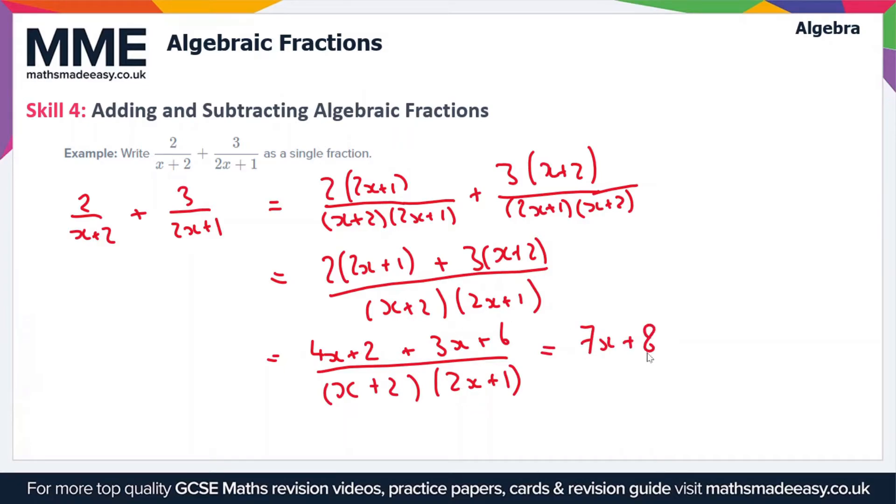So this numerator simplifies if we collect like terms to 7x plus 8, and so we get 7x plus 8 divided by x plus 2 times 2x plus 1.